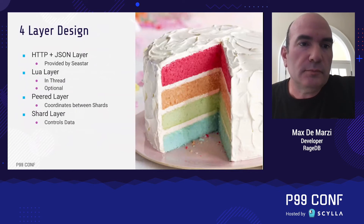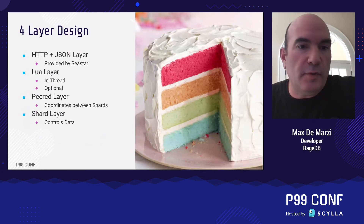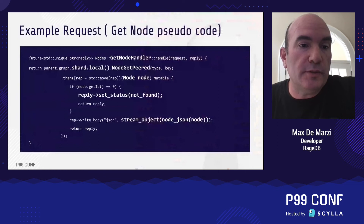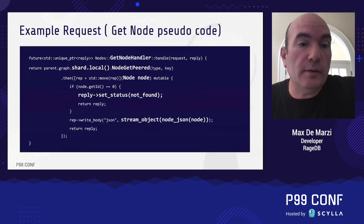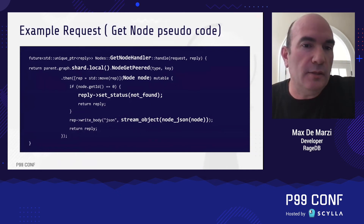Here's a pseudocode example — cleaned up for presentation. The HTTP server has a getNode handler that takes a request and returns a reply, with parameters for type and key. We take our local shard and send it a request to get a node from the peered layer. That shard figures out which shard has access to that node and returns it. If the node ID is zero, we couldn't find it and return a 404. If we did find it, we turn it into JSON and send it back.